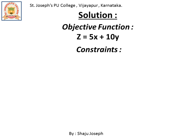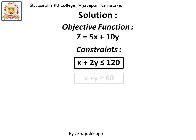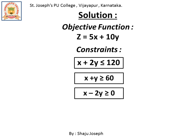Normally, every problem is given two constraints, but in this problem we are going to find three constraints: x plus 2y less than or equal to 120; x plus y greater than or equal to 60; and x minus 2y greater than or equal to 0. Additionally, x and y being non-negative are the common constraints given for every problem.